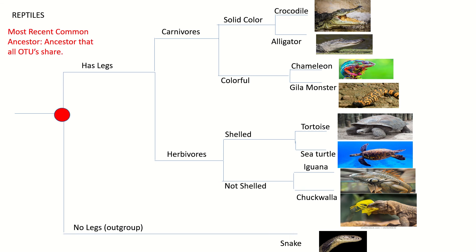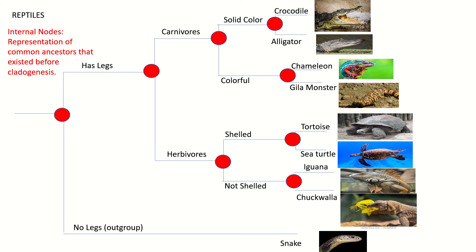The next definition is our most recent common ancestor, which is an ancestor that all OTUs share. You can find this by tracing the taxa back to the first point of divergence. Our last definition is internal nodes, which are representations of common ancestors that existed before cladogenesis occurred, and these red circles are representations of some internal nodes.